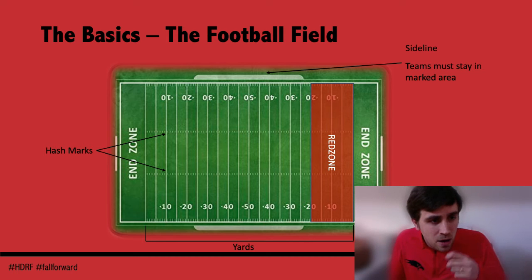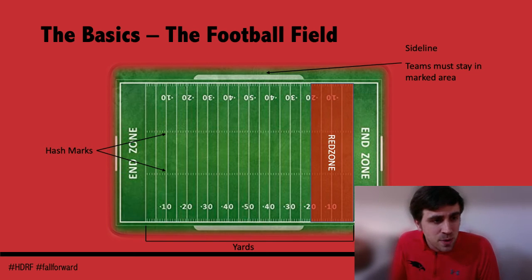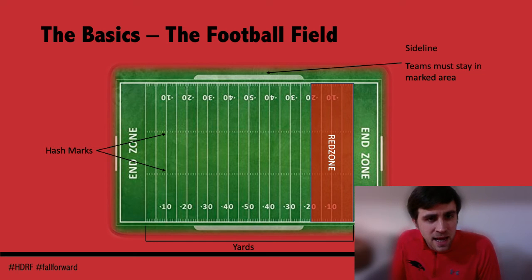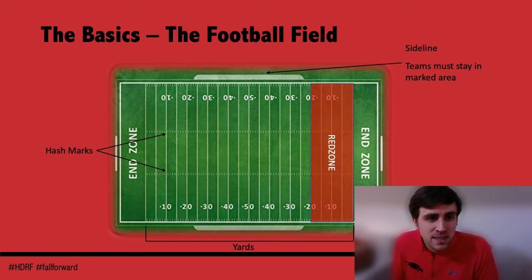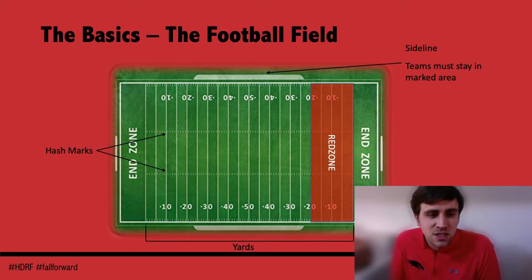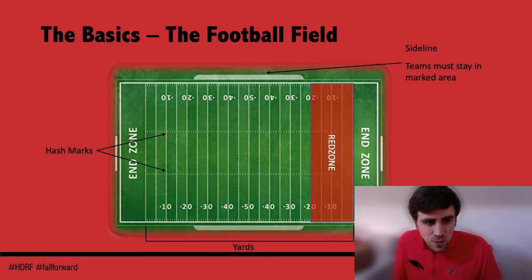You'll also notice that on the field, if you imagine a line going down the middle lengthways, equal distances away from there are two lines of hashes — those are the hash marks. Depending on where the last play finishes will identify where the next play starts. For instance, if the last play went out of bounds on the left-hand side, the next play will start on the left-hand hash. Each team also occupies one sideline, with a marked area for each team to stay in — that's why you see players and coaches congregated on the sideline in American football.